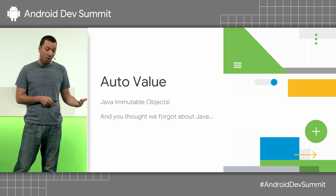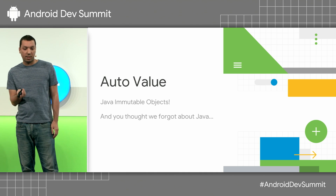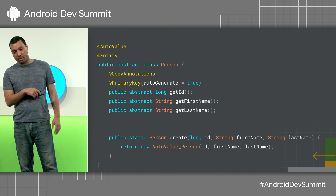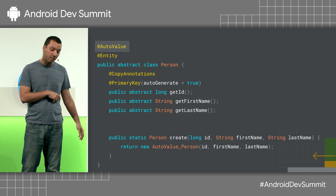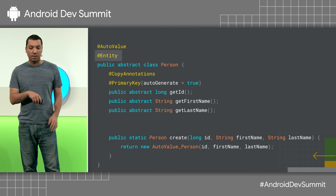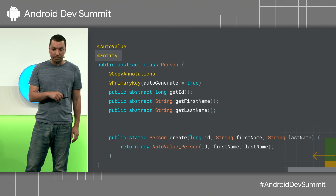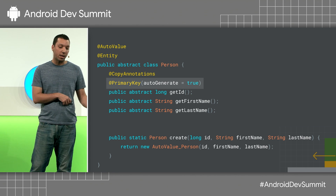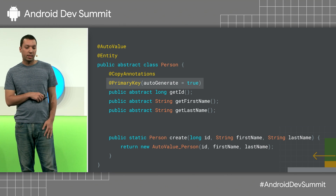Another feature we added, actually requested by the community, was auto-value support. If you're using Kotlin you don't have to worry about this because you have data classes, but if you're in the Java world and using auto-value because you want Java immutable objects, Room can now understand these auto-value annotated objects. You basically have an abstract class annotated with @AutoValue, and now you can also annotate that same abstract class with @Entity, and Room will create a backing SQLite table for it. Instead of fields, in auto-value you have abstract getters, which can now be annotated with Room annotations to declare primary key, column information, and so on.